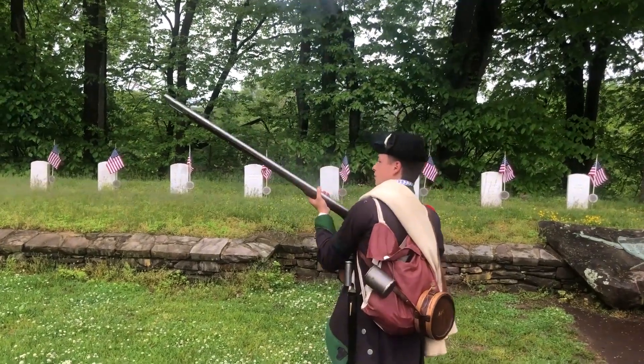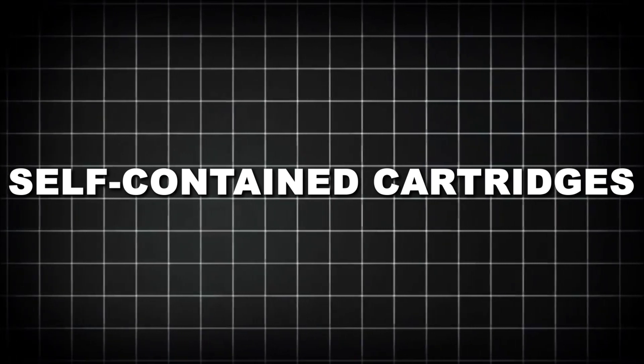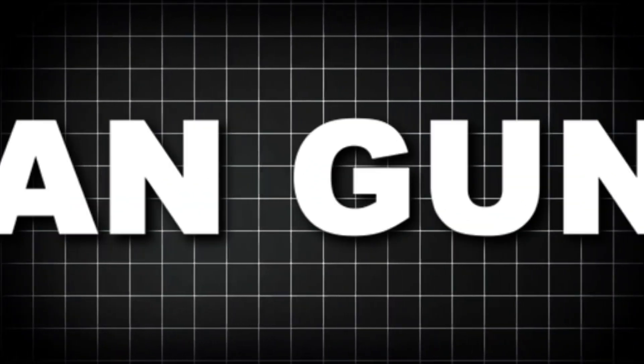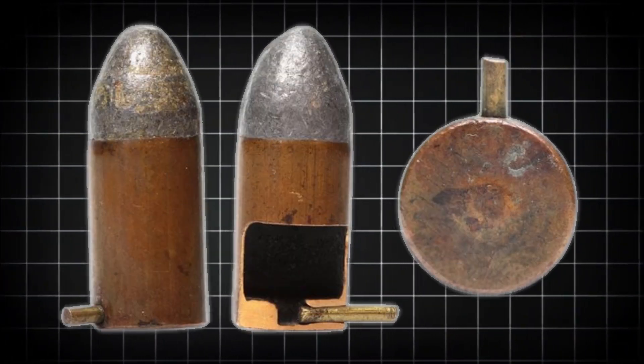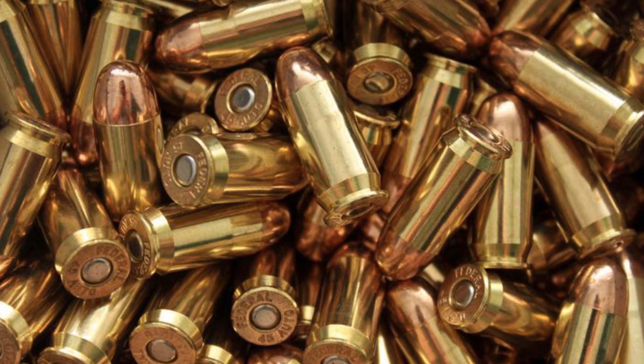The real revolution came in the mid-1800s with the development of self-contained cartridges. In 1847, a Parisian gunsmith named Benjamin Houliere patented the first fully integrated brass cartridge that combined primer, powder, and bullet in a single unit.